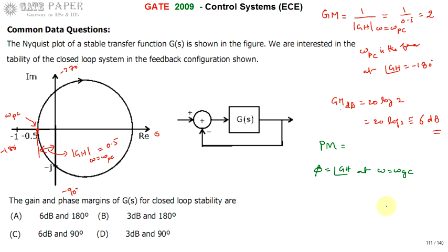The gain crossover frequency is the frequency at which the magnitude of GH equals 1. At omega equals omega GC, |GH| equals 1. On the Nyquist plot, only two values are indicated: minus 0.5 and minus j, which is minus j1. The point at minus j1 has magnitude 1, so that point corresponds to omega GC.